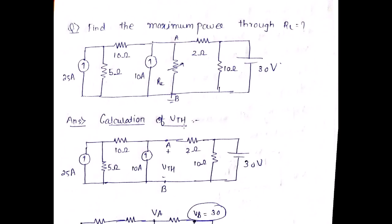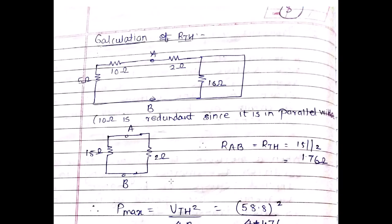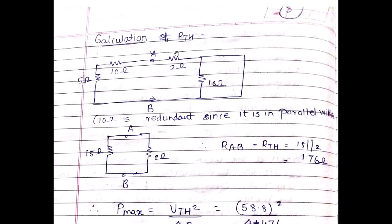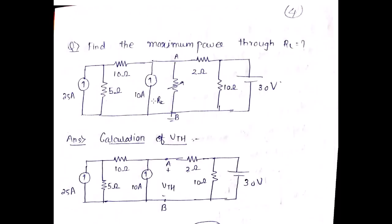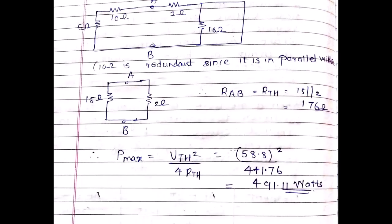For the numerical problem of finding maximum power transfer through RL: keep RL open, find Va using nodal analysis (Va = Vth). For Rth, open the current sources, short the voltage source, and find R_ab = Rth. Then the maximum power transfer = Vth² / (4 × Rth).